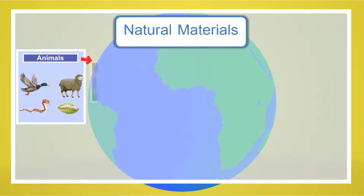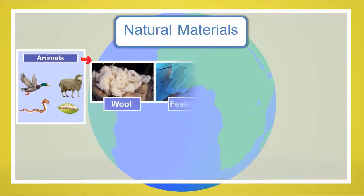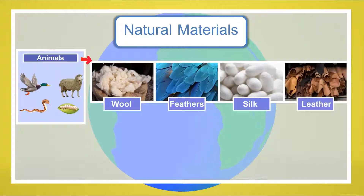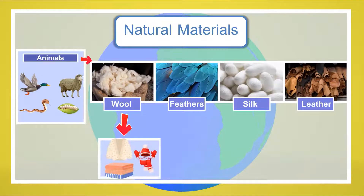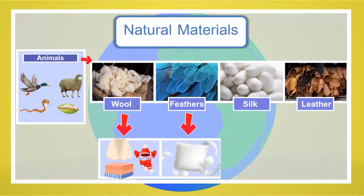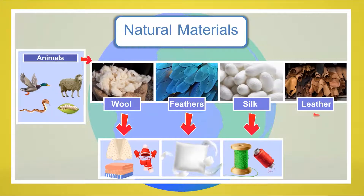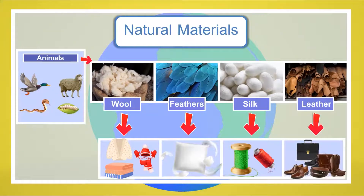Animals provide us with wool, feathers, silk, and leather. We use these natural materials we get from animals in order to make many different things. We use wool to make clothes and blankets, we use feathers to make pillows, we use silk to make strings, and we use leather to make purses and shoes and much more.